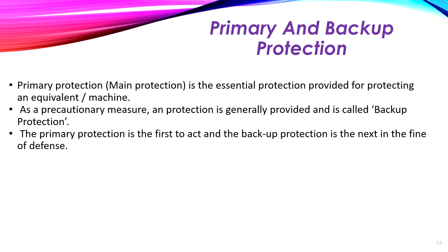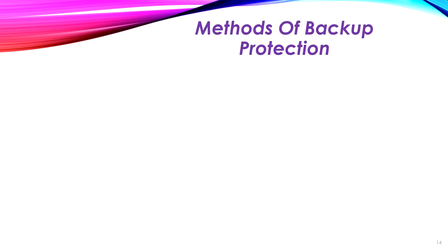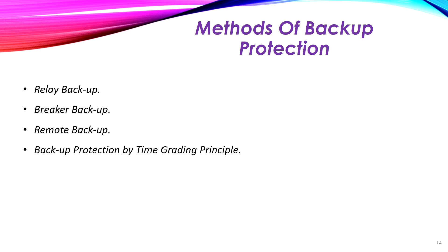The primary protection is the first to act, and the backup protection is the next in the line of defense. If the primary protection fails, the backup protection carries into action and removes the faulty part from the healthy system. The methods of backup protection are: number one, relay backup; number two, breaker backup; number three, remote backup; number four, backup protection by time grading; and number five, backup protection by the duplication principle.